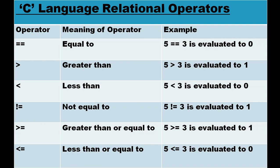Greater than or equal to (>=): is 5 greater than or equal to 3? Yes, 5 is greater, so one of the two conditions is true — it will evaluate to one. Less than or equal to (<=): check if 5 is less than or equal to 3. At least one condition must be true, but 5 is not less than 3 and not equal to 3, so it evaluates to zero.